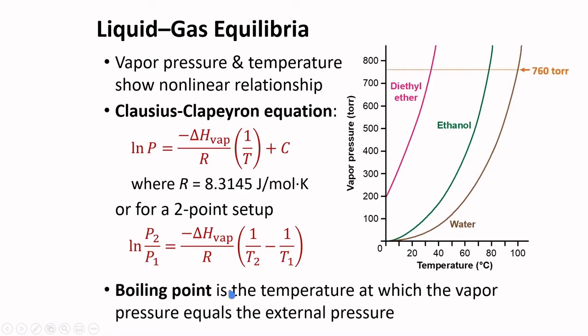Boiling point is the temperature at which the vapor pressure equals the external pressure. If the external pressure is 760 torr, this is equal to 1 atmosphere, then we can have the normal boiling points of substances. For diethyl ether, this is at 34.5 degrees Celsius.